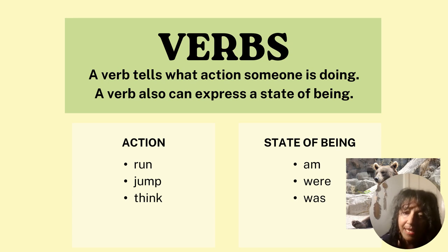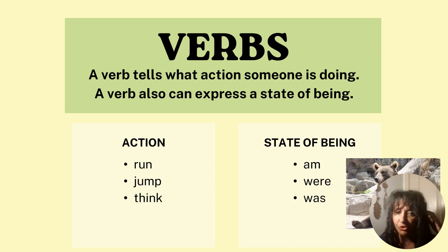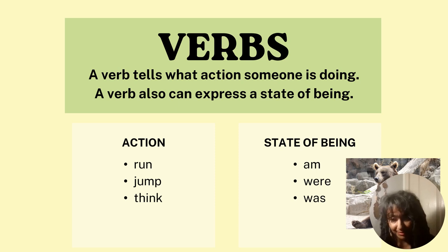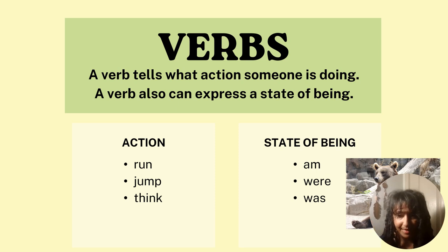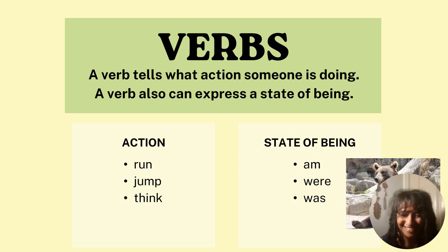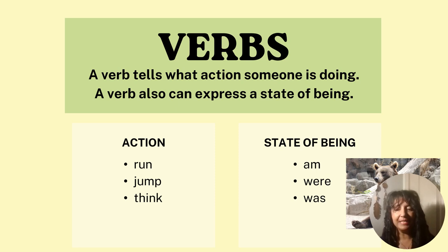All right, let's look at verbs. Now remember, there are two types of verbs. A verb can tell us an action that someone is doing, or a verb can express a state of being. For example, see this picture of my bear. He could be running, jumping, or thinking. Or he could just be a bear — I am a bear, he was a bear, you were a bear. So it's not an actual movement; it is describing the essence of what something is, and that is considered a verb.